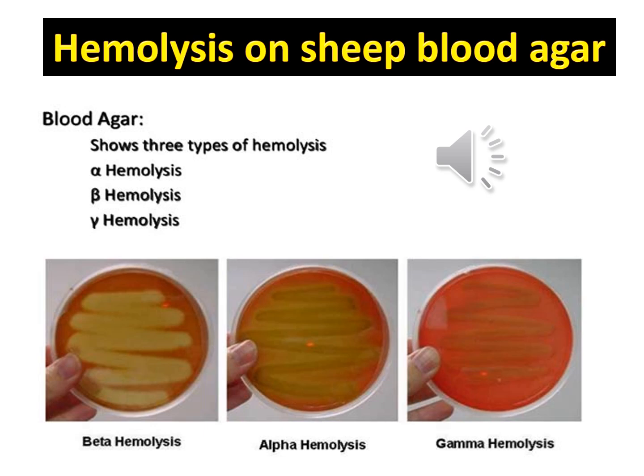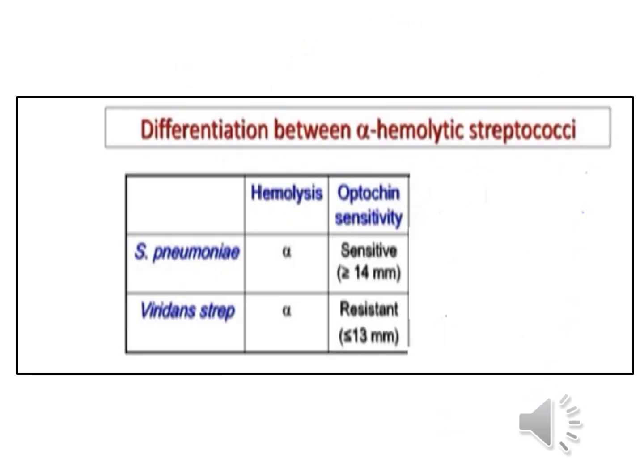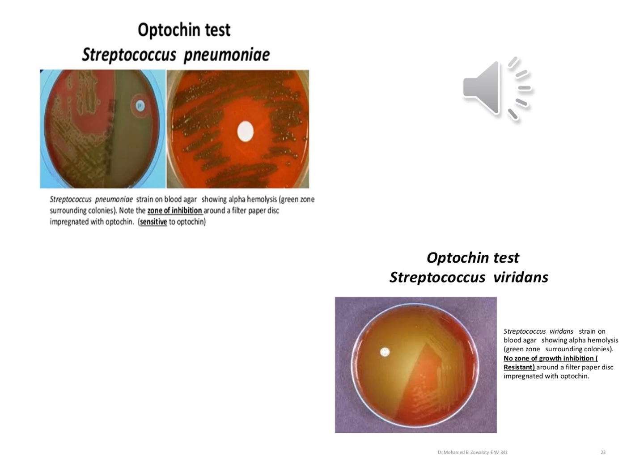Both this slide and the next one represent types of hemolysis on sheep blood agar. Streptococcus viridans can be differentiated from Streptococcus pneumoniae using the optochin test: S. viridans is optochin-resistant while S. pneumoniae is optochin-sensitive. S. pneumoniae has a polysaccharide-based capsule and the Lancefield antigens of the pyogenic members of the genus. Bacteria that are optochin-sensitive show a zone of inhibition around an optochin disc, while resistant bacteria such as S. viridans are not affected.